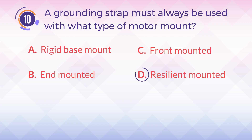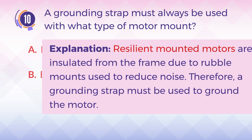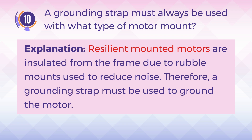The answer is D, resilient mounted. Explanation: Resilient mounted motors are insulated from the frame due to rubber mounts used to reduce noise. Therefore, a grounding strap must be used to ground the motor.